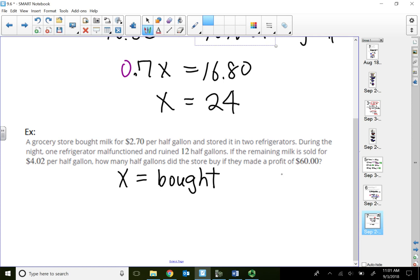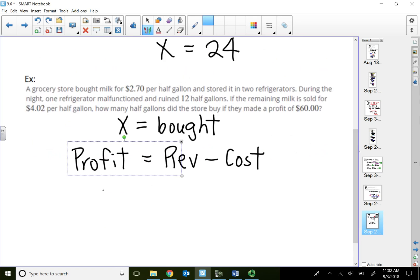So this problem we need to understand the concept of profit. So normally profit is always equal to the revenue. Revenue means the money that you receive from selling stuff minus the cost. The cost is what you spend to purchase the merchandise. So what you're selling for minus the cost, then what's left of it has got to be the profit that you make. So let's think about this. I want the profit to be $60.